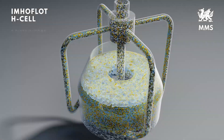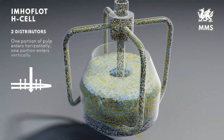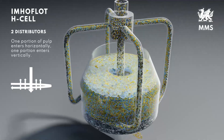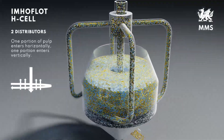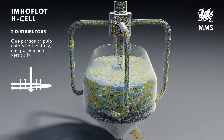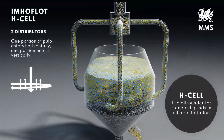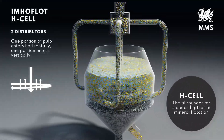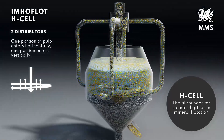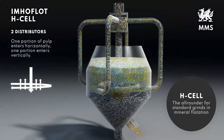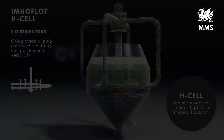The all-rounder of Imhoflot separators is the H-cell. The feed nozzle arrangement combines the benefits of vertical and horizontal pulp inlets. Coarse as well as fine particles float efficiently. The relationship between vertical and horizontal flows can be controlled to accommodate changes in the processing requirements caused by the ore body.